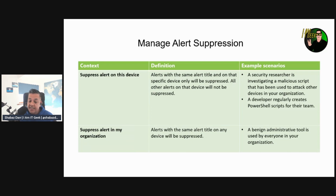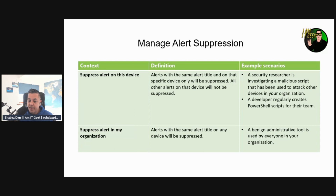The second suppression context is suppressing alerts across your organization. In this case, alerts with the same alert title on any device will be suppressed. A good example is a benign administrative tool that is used by everyone in the organization.